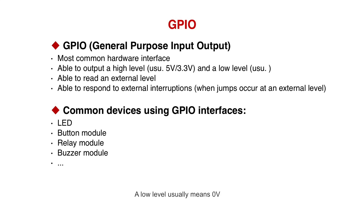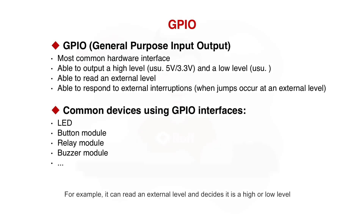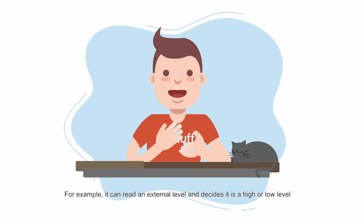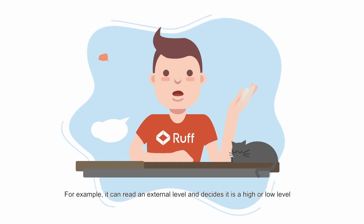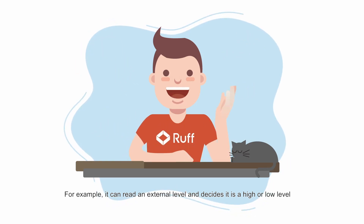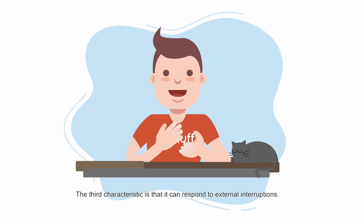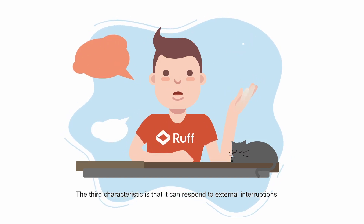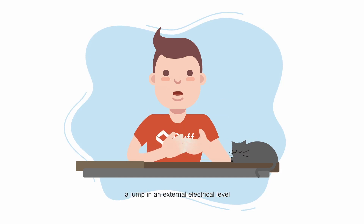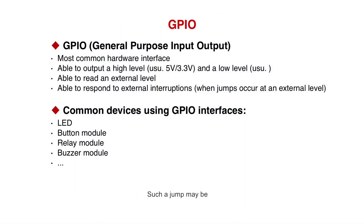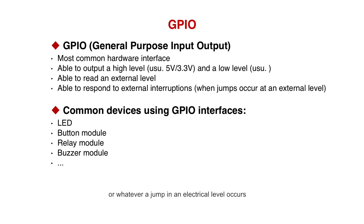A low level usually means zero volts. The second characteristic is that it can read externally fed electrical levels — for example, it can read an external level and decide if it is a high or low level. The third characteristic is that it can respond to external interruptions. An interruption means a jump in an external electrical level, such as a jump from a high level to a low level, or from a low level to a high level.